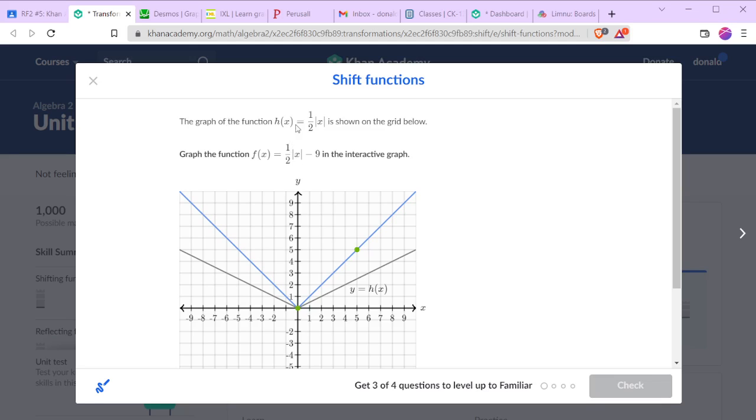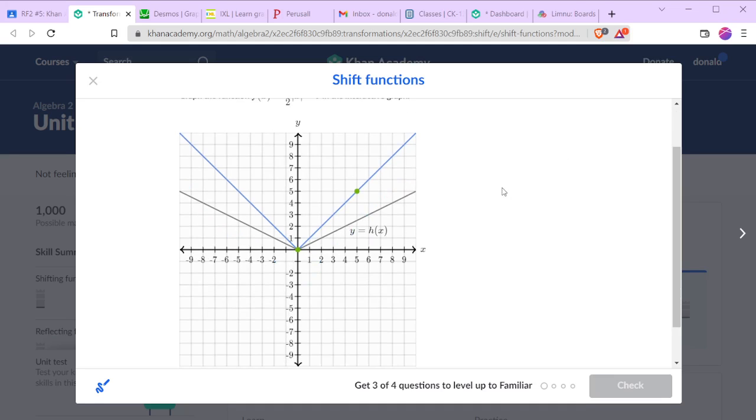The graph of the function one half the absolute value of x is shown below. We need to graph one half of the absolute value of x minus nine.